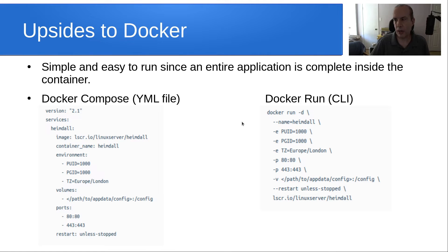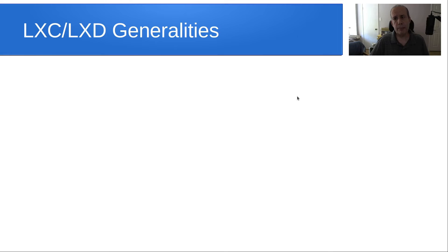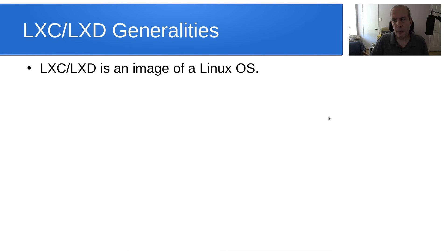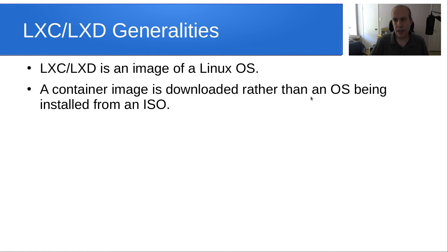A detached process runs independently of the terminal where you started it, and will automatically start on the next reboot of the Docker host as long as restart is set. LXD is an image of a Linux OS — not an image of an application. A container image is downloaded rather than an OS being installed from an ISO. Unlike a virtual machine where you download an ISO and perform an OS installation, with containers you download the OS image and it is instantly available and running.